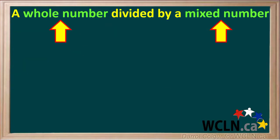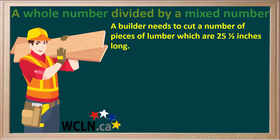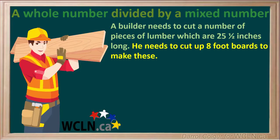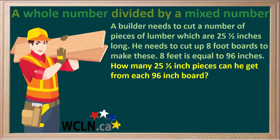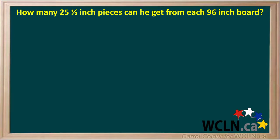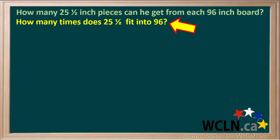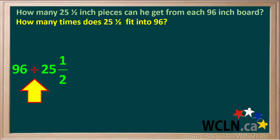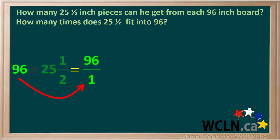Our next example will be a whole number divided by a mixed number. A builder needs to cut a number of pieces of lumber which are 25 and a half inches long. He needs to cut up 8-foot-long boards to make these. 8 feet is equal to 96 inches. The question is: how many 25 and a half inch pieces can he get from each 96-inch board? To answer this, we need to divide 96 by 25 and a half.